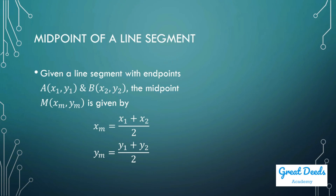Midpoint of a line segment. Given a line segment with endpoints (x₁, y₁) and (x₂, y₂), the midpoint M has x-coordinate (x₁ plus x₂)/2 and y-coordinate (y₁ plus y₂)/2. This is simply the average value of the x-coordinates and the average value of the y-coordinates.